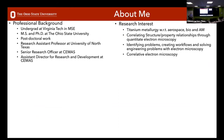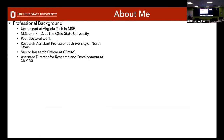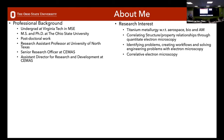A little about my professional background: I was an undergrad at Virginia Tech in MSE. I did my MS and PhD here at Ohio State along with postdoctoral work. I took a short stint as a research assistant professor at University of North Texas, then came back when we opened CMASS as a senior research officer and moved into an assistant director position. My research interests have been in metallurgy — quite a bit with titanium in aerospace, additive, and bio — correlating microstructure-property relationships using electron microscopes. Now I'm interfacing with industry, identifying problems, and creating workflows with our electron microscopes to solve real-world problems.